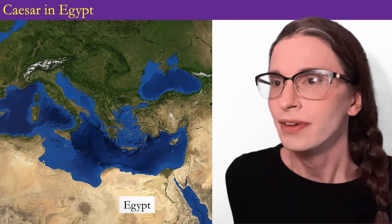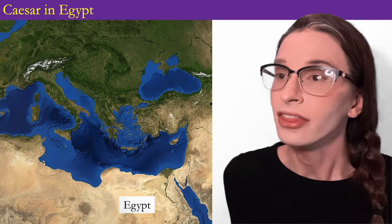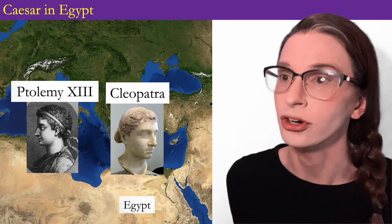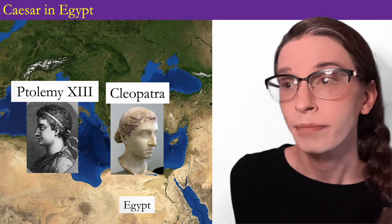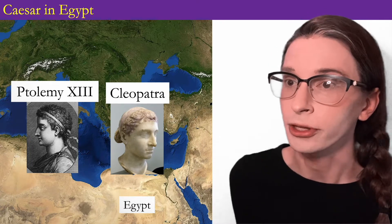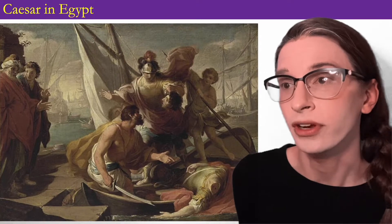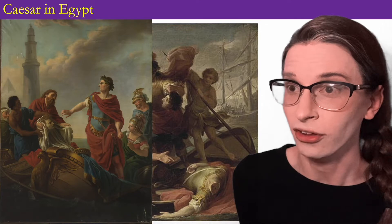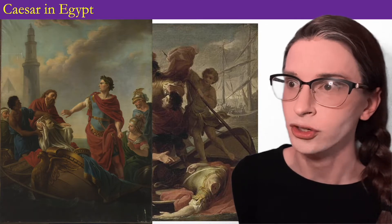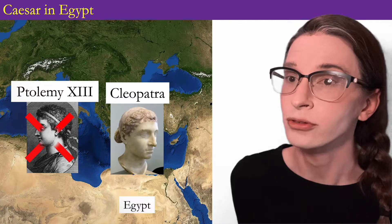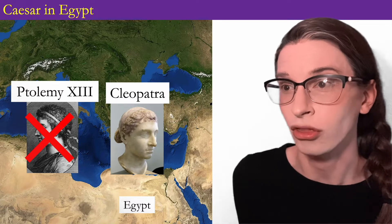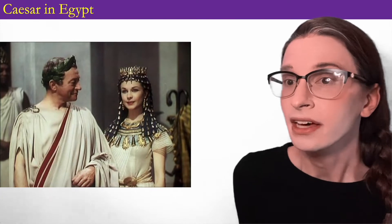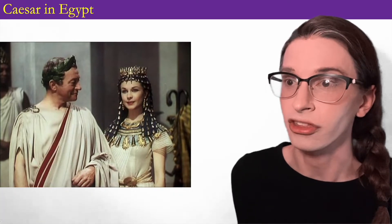We open in Egypt, where a struggle has been going on. The child king Ptolemy XIII and his adult sister Cleopatra VII Philopater are fighting over the throne. When Pompey lands in Egypt, it's advisors of Ptolemy who have him beheaded, hoping to win favor with Caesar — it has the opposite effect. Caesar is angered by their betrayal and winds up siding with Cleopatra. His troops help Cleopatra's army defeat Ptolemy's, and Cleopatra takes the throne. She and Caesar then become lovers, and Cleopatra later gives birth to Caesar's only known son, Caesarion.